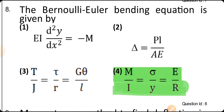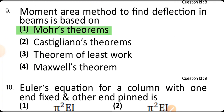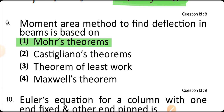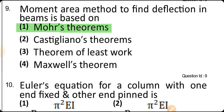The Euler's bending equation is M/I = σ/y = E/R. The moment area method to find deflection in a beam is based on Mohr's theory.